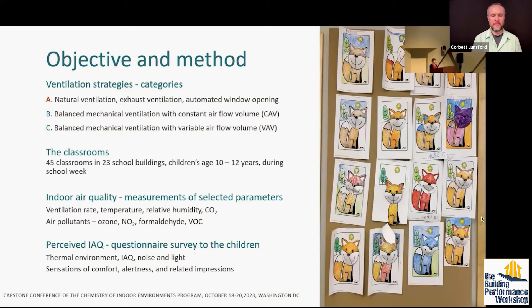The third category was balanced mechanical ventilation with variable airflow volumes, VAV. We named the categories A, B, and C. The investigation was performed in 23 school buildings, selecting one, two, or three classrooms in each building. We selected classrooms in grade four — children aged 10 to 12 years in Sweden — and performed measurements during one school week, Monday morning to Friday afternoon.